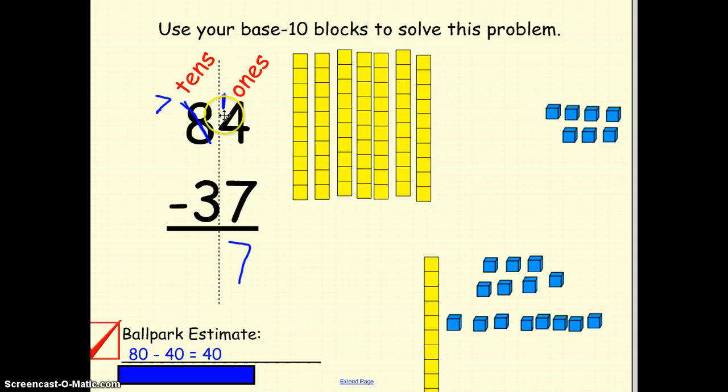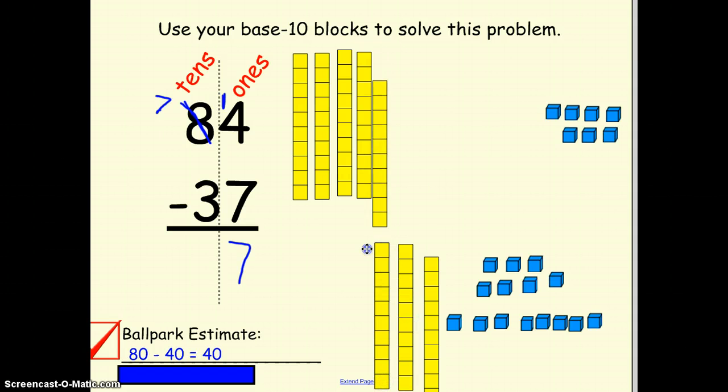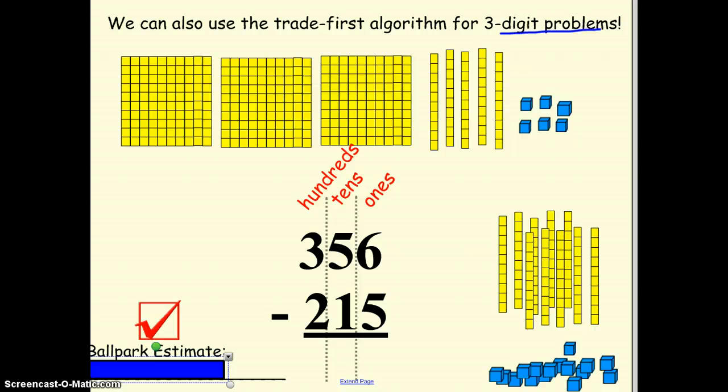But I'm not done, I need to subtract my tens. So I have 7 tens here, I'm going to take away 3 tens, and I can also show it on paper. 7 tens take away 3 tens gives me 4 tens, and it also shows on my base-10 blocks, 47. And it's close to my ballpark estimate, so I know my answer is correct, or probably correct.